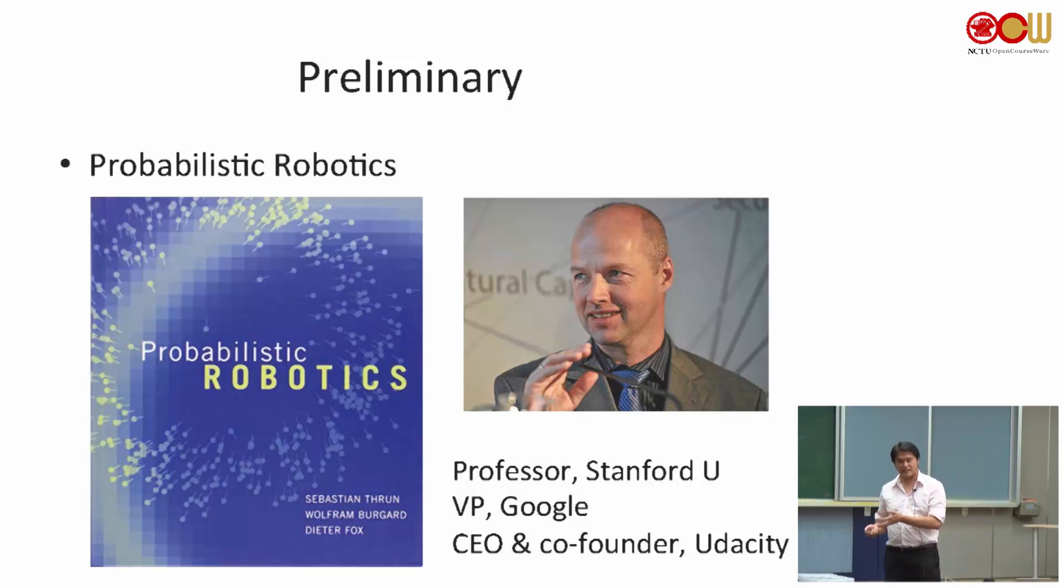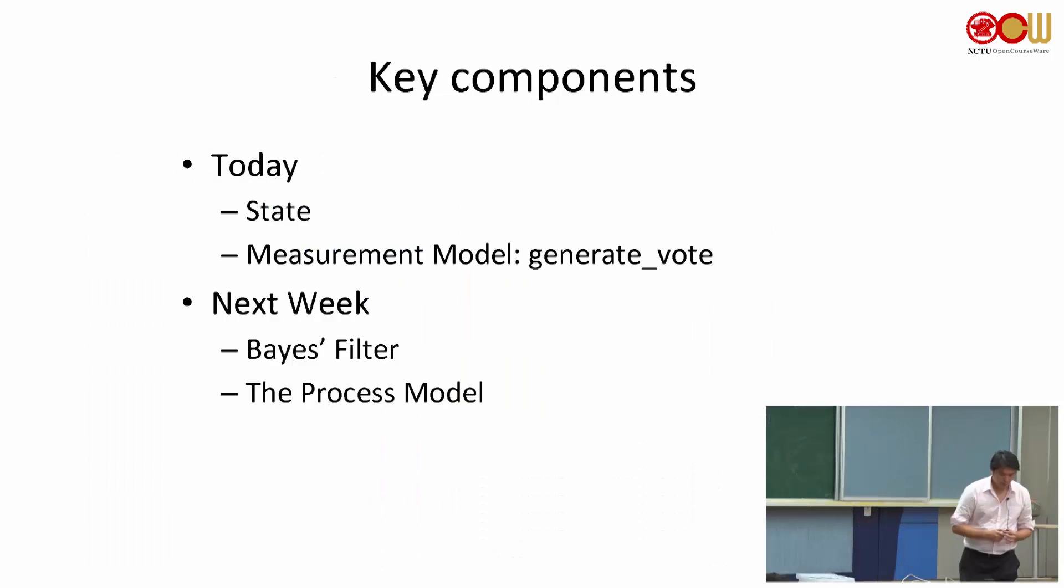If you don't know Sebastian yet, please recognize this name. This textbook is Probabilistic Robotics. This is the classic. If you want to do anything about robotic research, you will have to know about this textbook. And this man, he's a Stanford professor and the vice president at Google and the co-founder of Google X. And also Udacity, a famous online course platform, he's the CEO and co-founder.